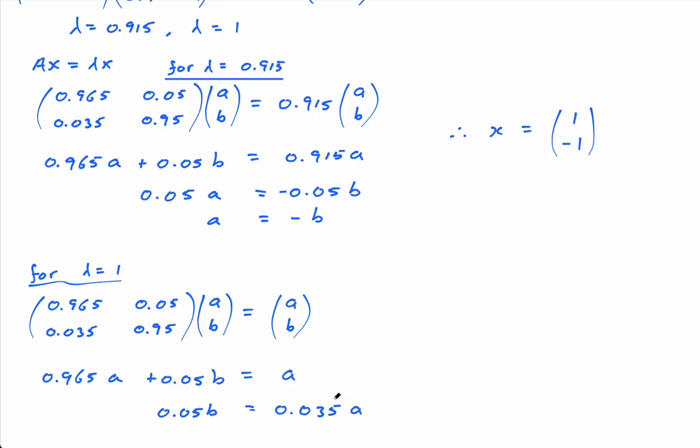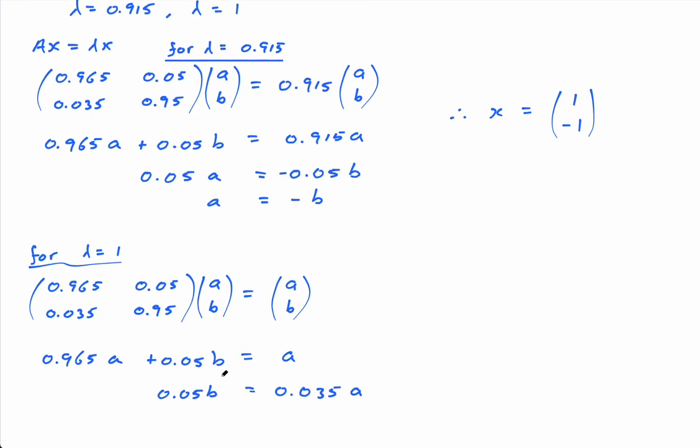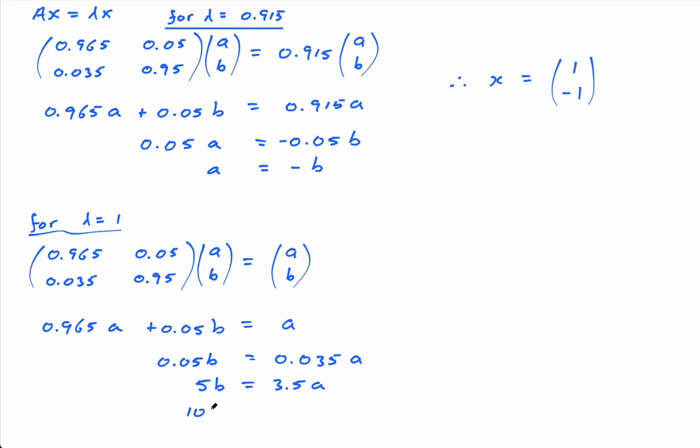Okay, and I could multiply both of these by, well hang on, I could just do b. I could divide by 0.05, could I do that? No, let's, all right, let me just multiply here by 100. So I have 5, I'll multiply both sides by 100, so I get 5b equals 3.5a. And then let's multiply both sides by 2. So I get 10b equals 7a.